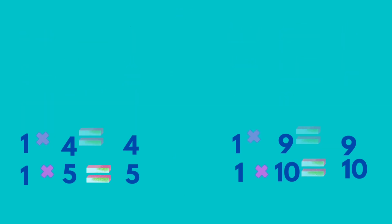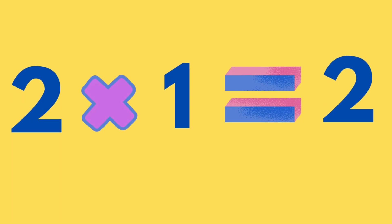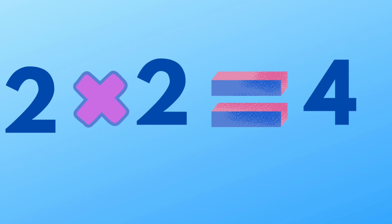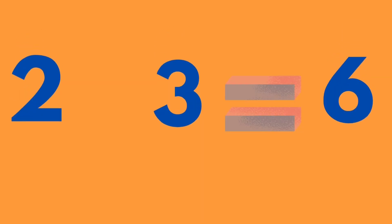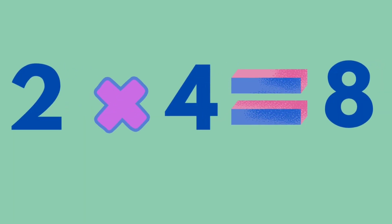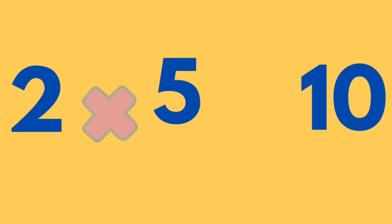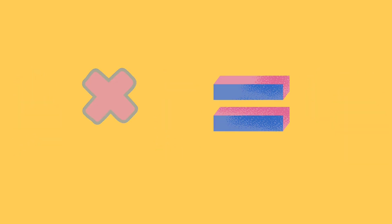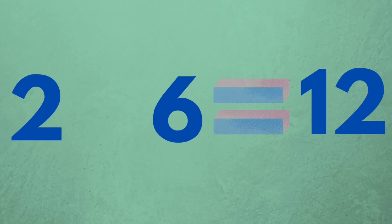Now table 2. 2 times 1 is equal to 2. 2 times 2 is equal to 4. 2 times 3 is equal to 6. 2 times 4 is equal to 8. 2 times 5 is equal to 10. 2 times 6 is equal to 12.